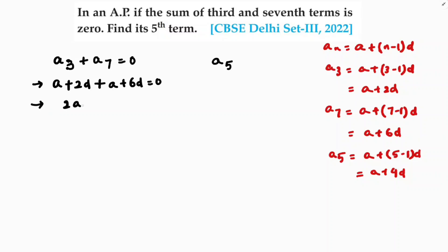Now here we're getting 2a plus 8d equals 0. If we'll take 2 common, a plus 4d equals 0.